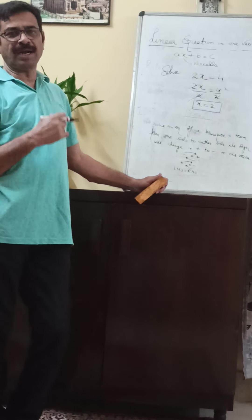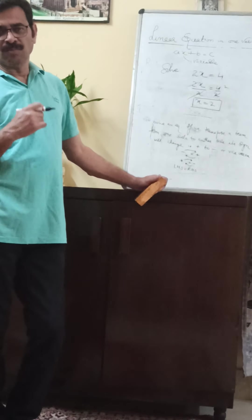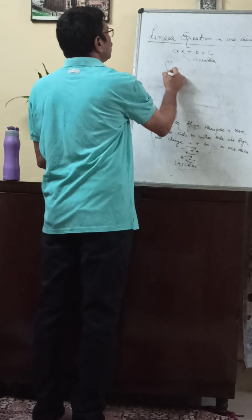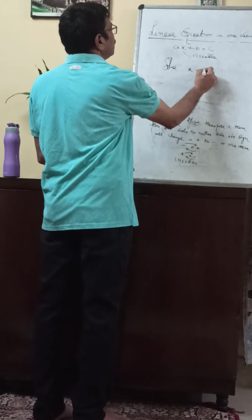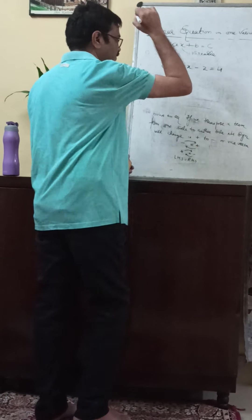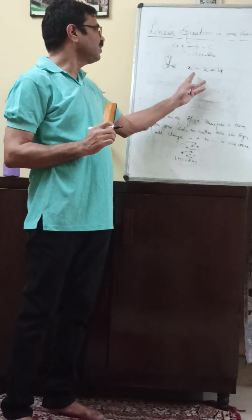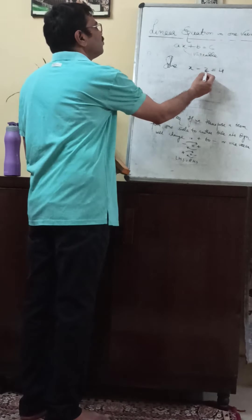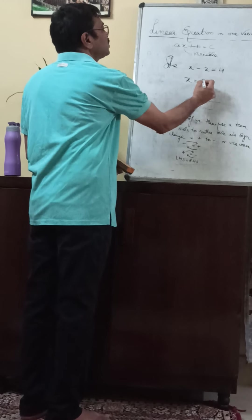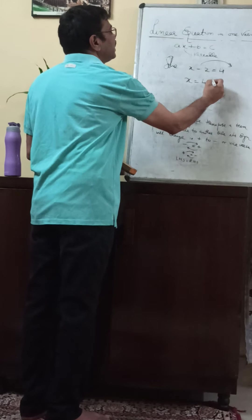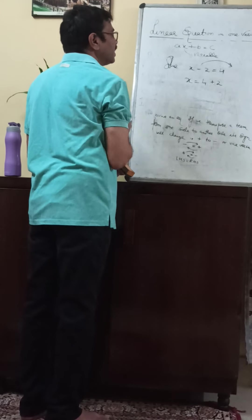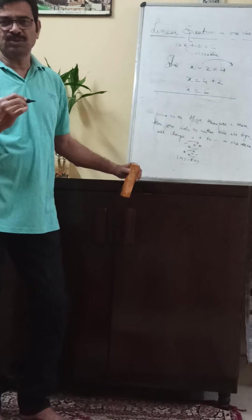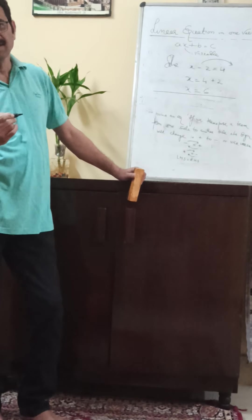Now I will use one alternative method to solve the equation — that is the transposition rule. Solve: x minus two is equal to four. I will transpose this minus two to the right-hand side. The sign of two is negative; when it is transferred to the right-hand side, its sign will become plus. So x is equal to six. In this way we can use the transposition rule to solve an equation.